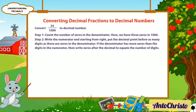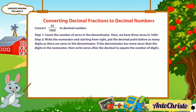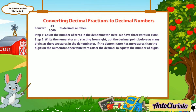Step 2: Write the numerator and, starting from the right, put the decimal point before as many digits as there are zeros in the denominator. If the denominator has more zeros than the digits in the numerator, then write zeros after the decimal point to equate the number of digits.